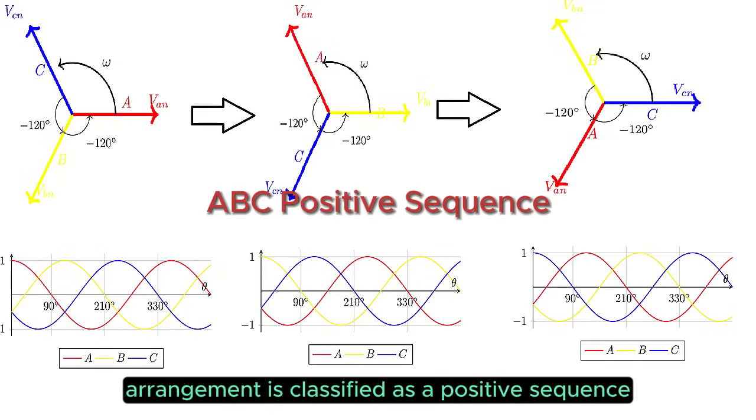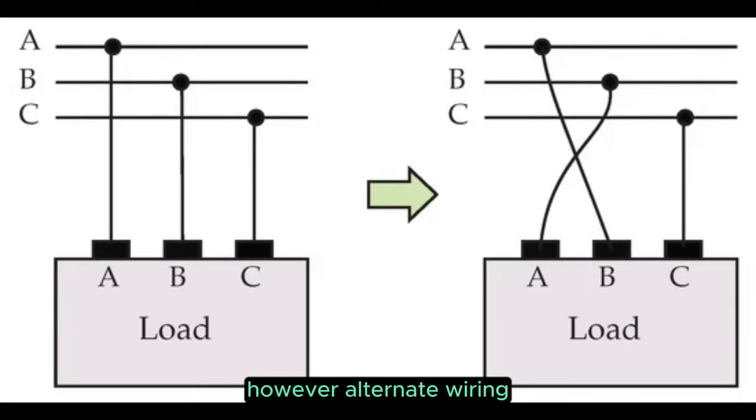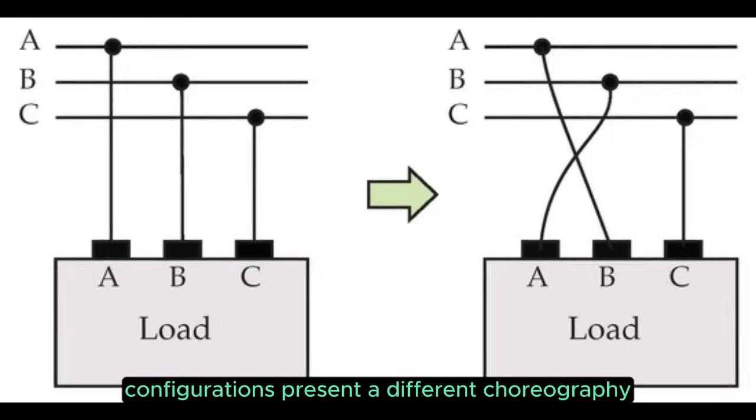This orderly arrangement is classified as a positive sequence, denoted by the ABC order. However, alternate wiring configurations present a different choreography.